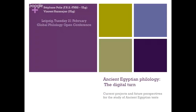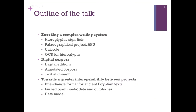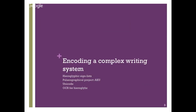Good afternoon everyone. We hope to keep you awake before the coffee break with some entertaining ancient Egyptian material. The goal today is to give an overview of what has been done in the field, zooming out from the issue of encoding hieroglyphic script up to the digital level, the interchange format, linked open data issues, and the data model we use for encoding our corpora. First, the encoding of complex writing systems — I'll talk about the hieroglyphic sign list, some paleographical projects, the Unicode issue, and what we have for OCR of the hieroglyphic script.